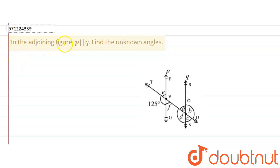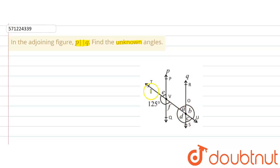The given question says that in the adjoining figure, P is parallel to Q — find the unknown angles. There is a figure given in the question where P is parallel to Q and there are unknown angles: angle A, angle B, angle C, angle D, angle E, and angle F. We have to find the value of these unknown angles, where we are given one angle that is 125 degrees.